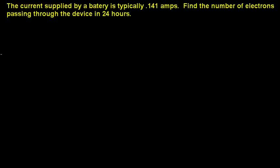Hi. Today we're talking about current and electron flow through a device. In this problem from chapter 17 of the Hybrid Physics book, the current supplied by a battery is typically 0.141 amps. Find the number of electrons passing through the device in 24 hours.